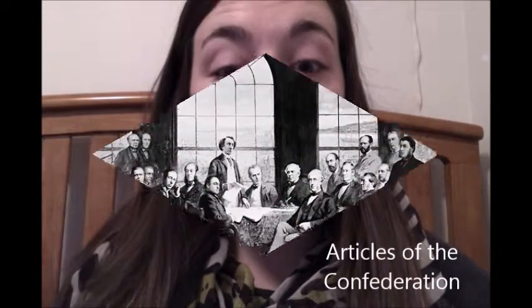What I would like each of you to do is pull out a piece of paper and trace your hand. We'll be following along with the video, and each finger represents one of the weaknesses of the Articles of Confederation. So pull out that piece of paper now and get that ready to go.